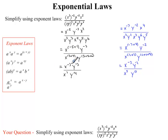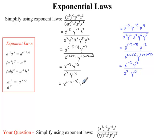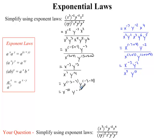We have a power with base x in our numerator and base x in our denominator, so this simplifies to x. We take the exponent in the numerator — negative 3 — and subtract the denominator exponent — so minus 7. Then for the y terms, we have y in both numerator and denominator, so we subtract those exponents: negative 3 minus 14. Simplifying: negative 3 minus 7 gives us x to the exponent negative 10, and negative 3 minus 14 gives us y to the exponent negative 17.